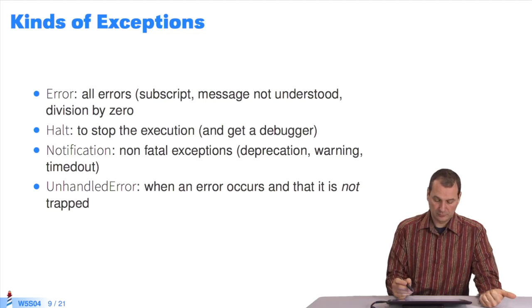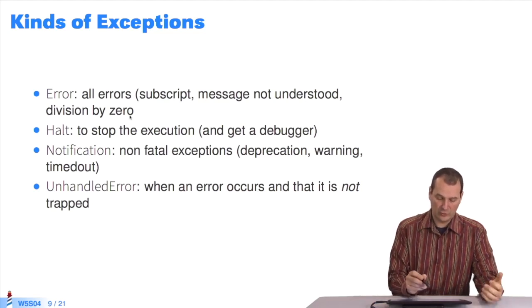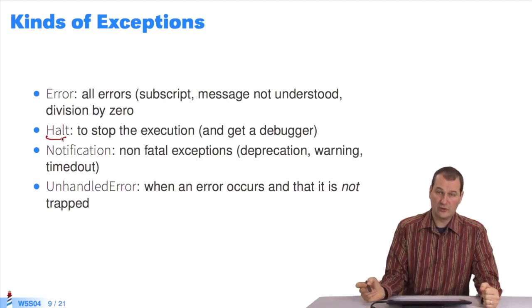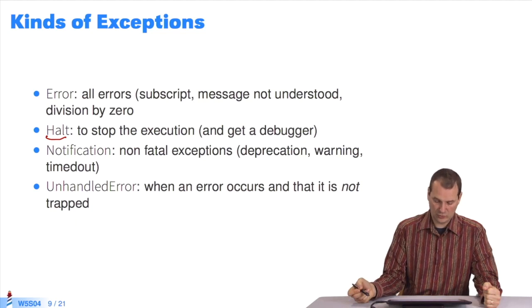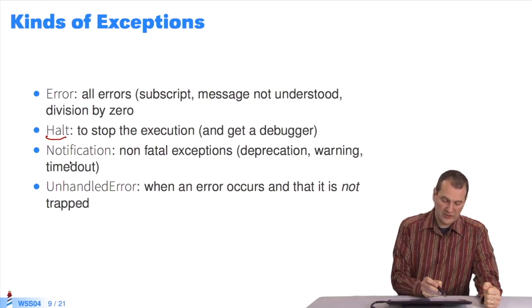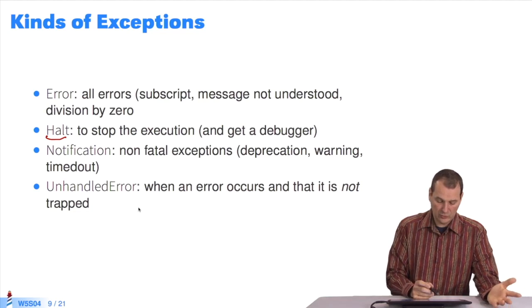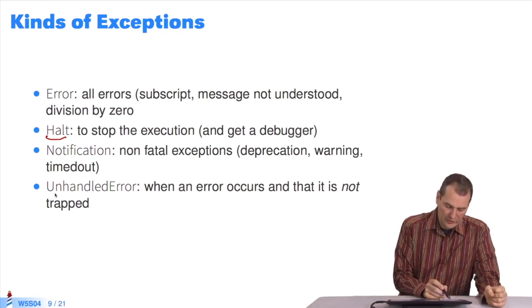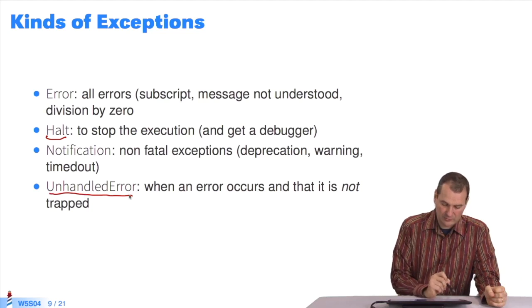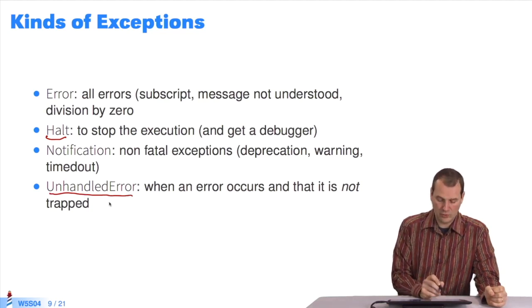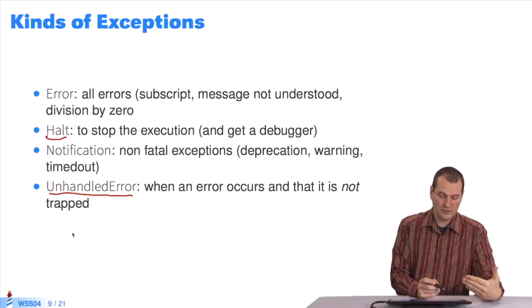What are exceptions in Pharo? There are errors: message not understood, subscript out of bounds, division by zero. You have Halt, which we'll look at when we come to debugging — you can put a breakpoint which will stop execution of the system. You have notifications — everything non-fatal — so a deprecation warning, 'don't use this method, use another', warnings and timeout. There's also an error message which describes unhandled errors; this is what raises the debugger.